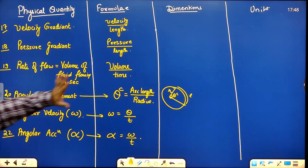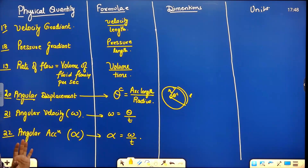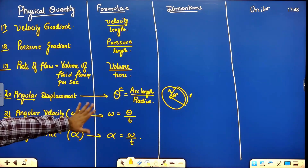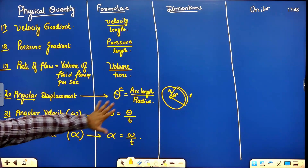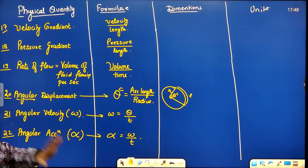I have written 6 terms. Write them down and try to find the dimensions yourself using the previously derived data. You have five minutes.